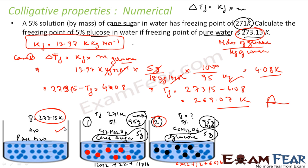This was a pretty easy question, but you have to think carefully. It was given that for a pure solution with cane sugar at 5% by mass, the freezing point was 271K. For 5% glucose, what will be the change in temperature? We used the Kf derived from the cane sugar data to find the answer for glucose.